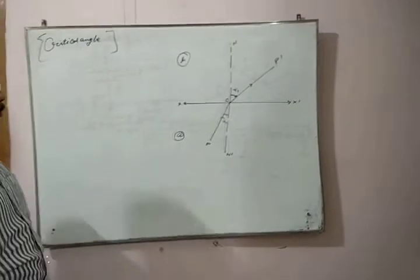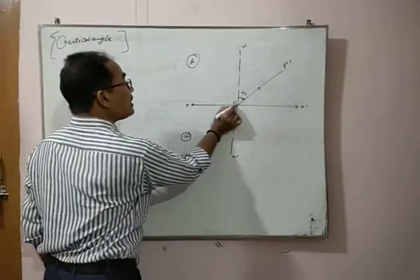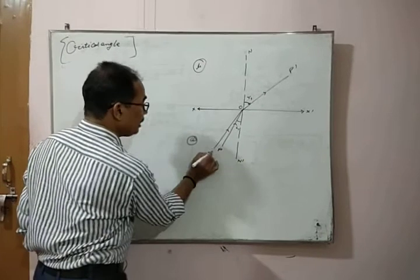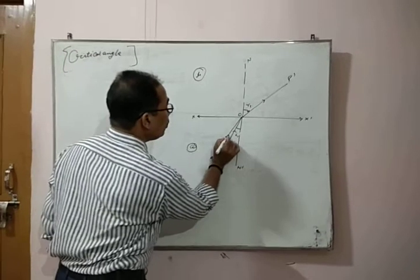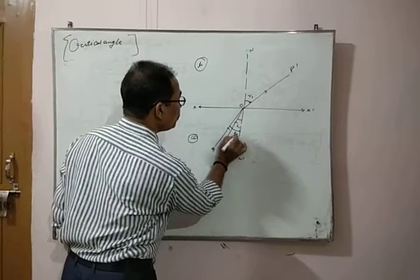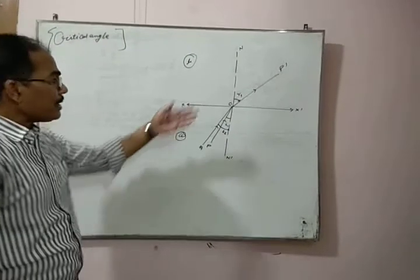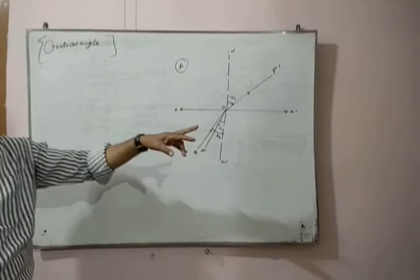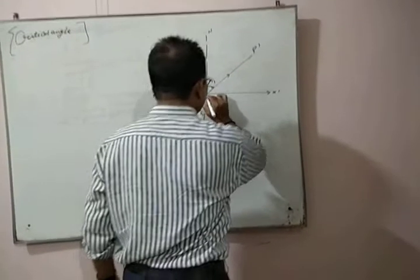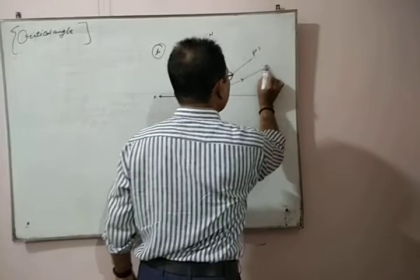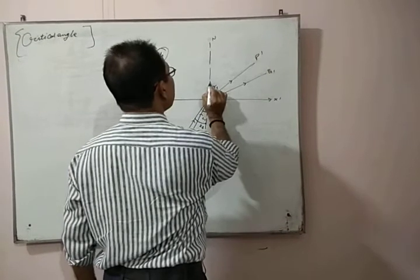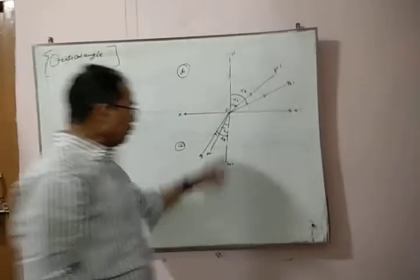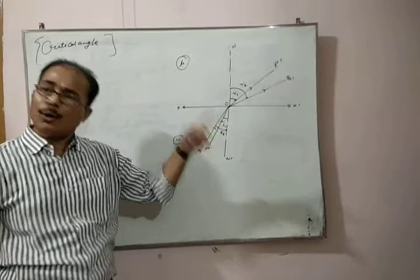Now we are increasing the angle of incidence. Suppose this is the incident ray, and now the angle of incidence is I2. The angle of reflection will be more than r1. This is your reflected ray, and suppose this is the angle of reflection r2. When angle of incidence increases, angle of reflection also increases.